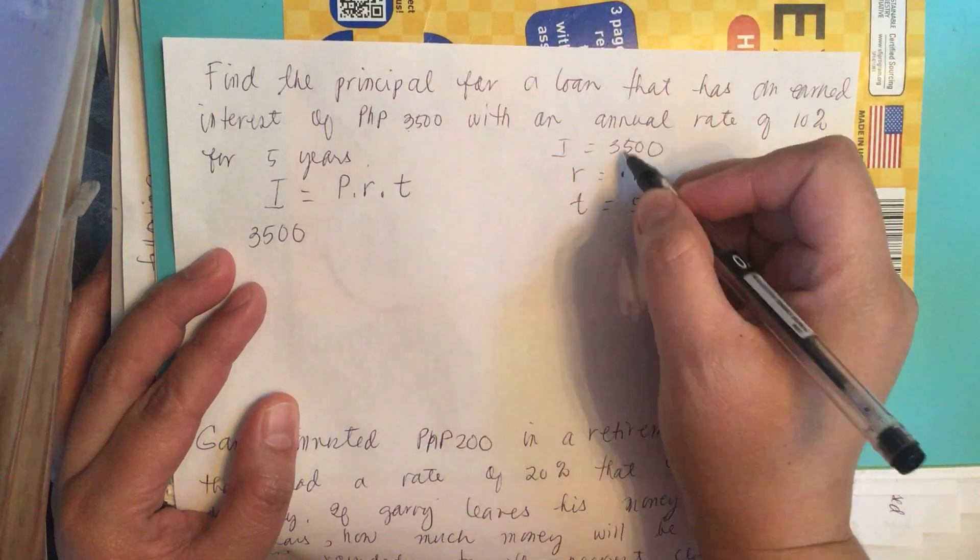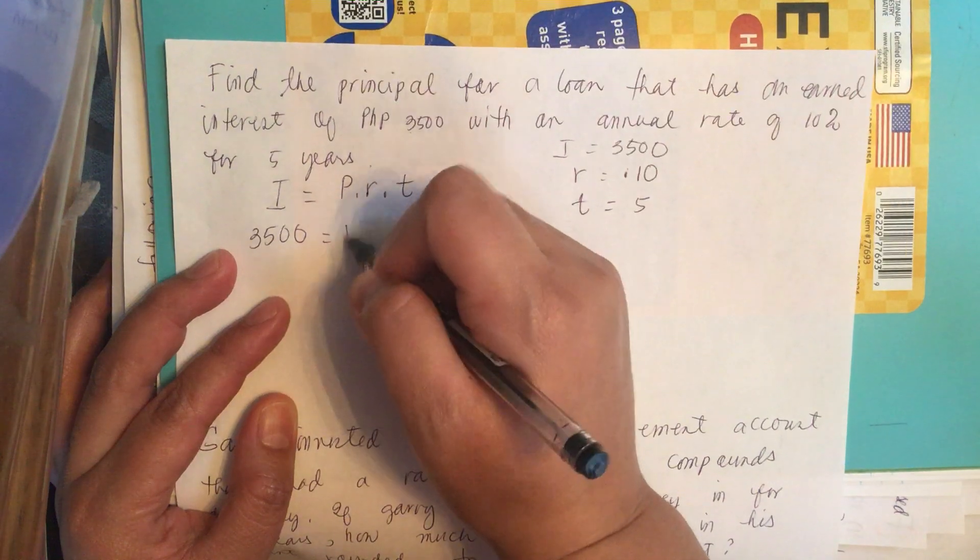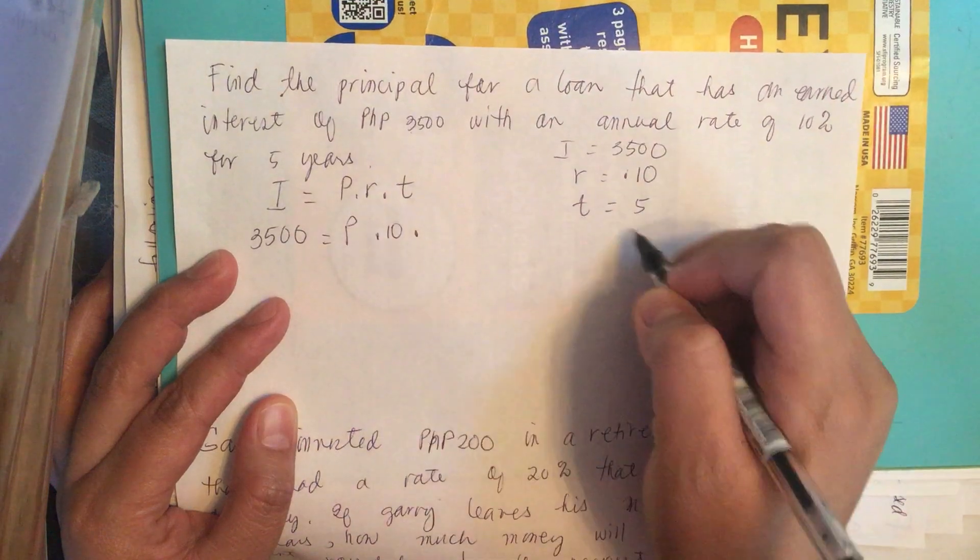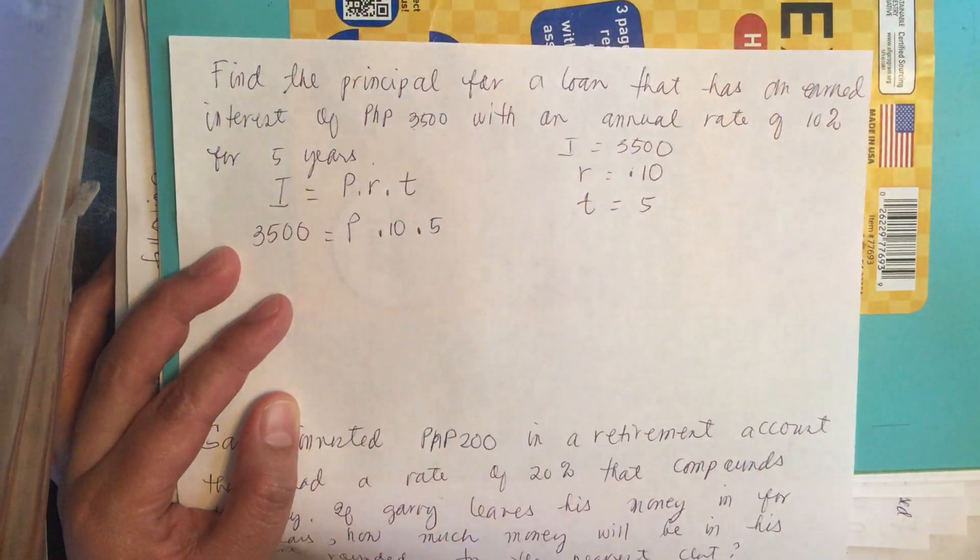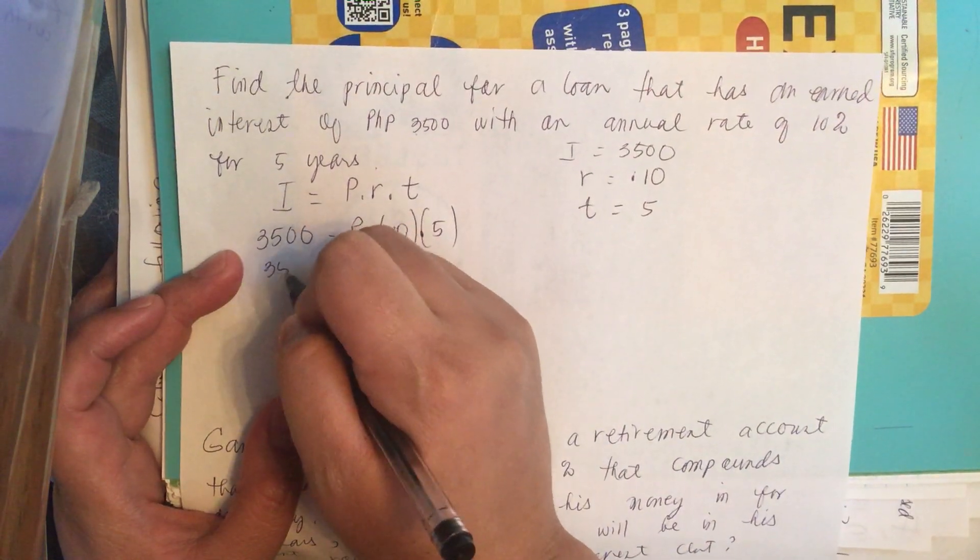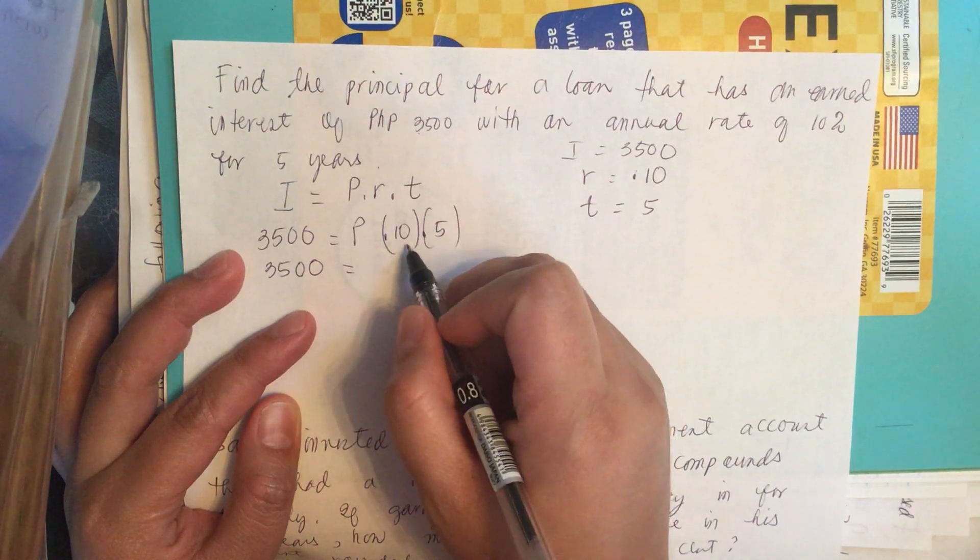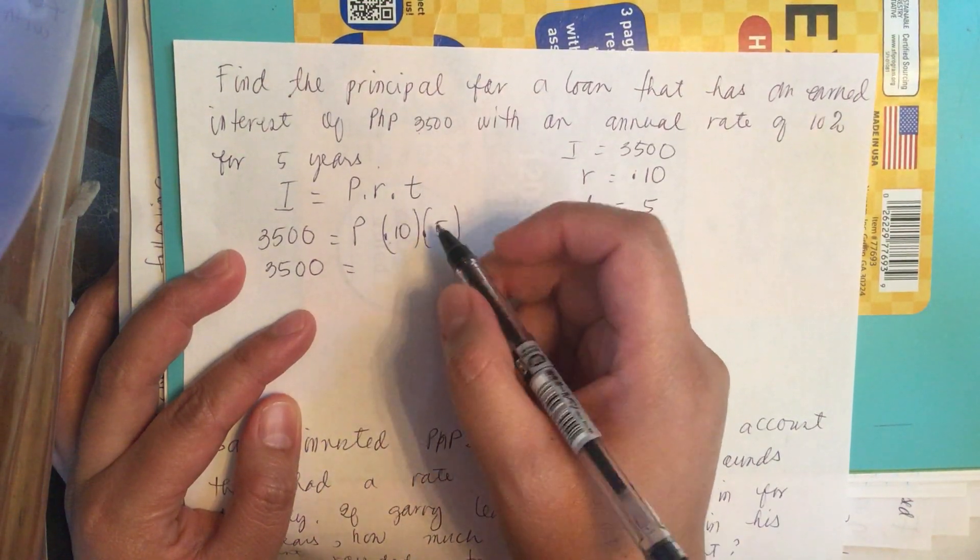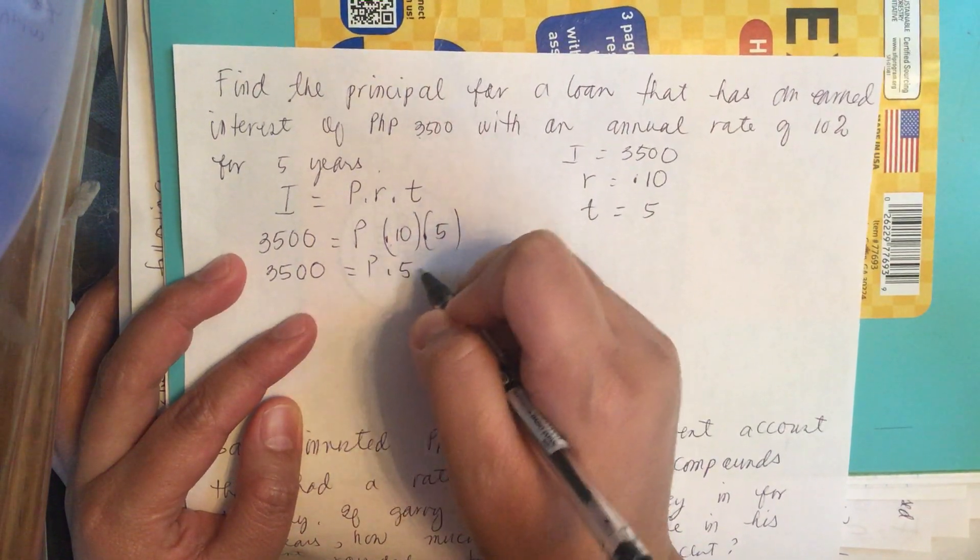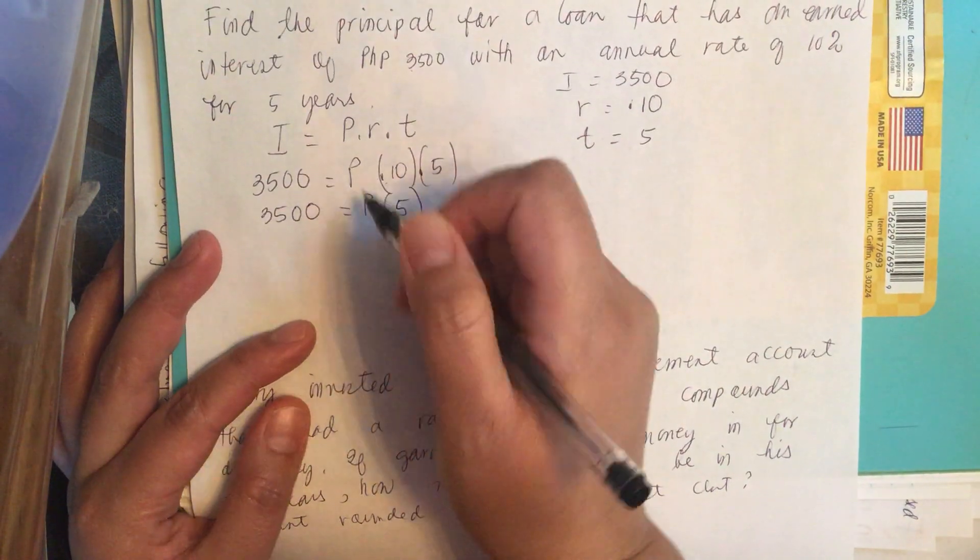We just plug in our numbers into the formula. So this is P times 0.10 times 5. So this is equal to 3,500 equals 0.10 times 5 is equal to 0.5.